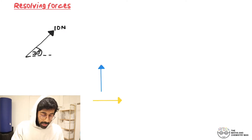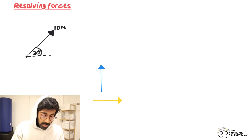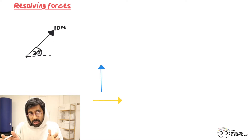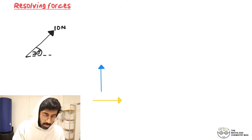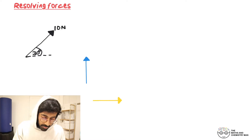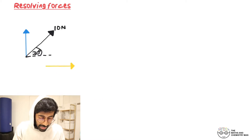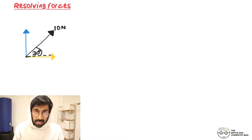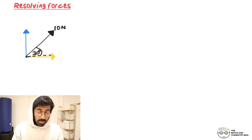We've got this force acting in the north-northeast direction on a compass. If it's acting north and east, it means it's a bit north and a bit east. So we can say this force of 10 newtons can be expressed as a little bit north, i.e. upwards as the blue arrow shows, and a little bit to the right, which is the yellow arrow.